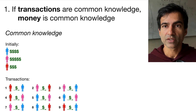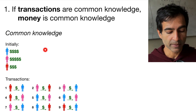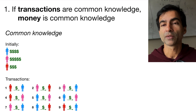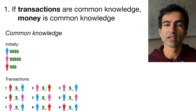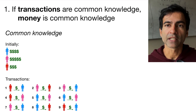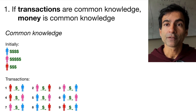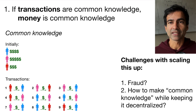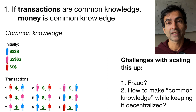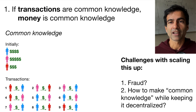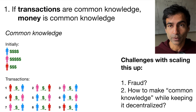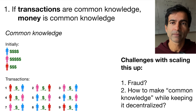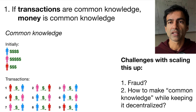If everybody knows what the initial money was and how much money was sent around and in what order, then at all times we all know how much money everybody has — we have a meaningful system of money. The problem with this idea is that it doesn't easily scale up. If you have millions of people scattered around in the world, then it's hard to implement this idea as is.